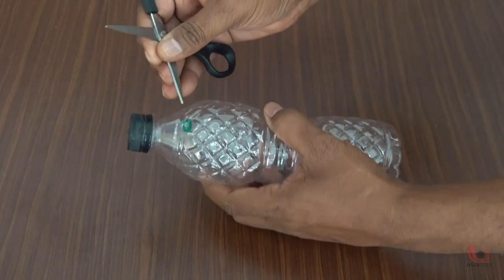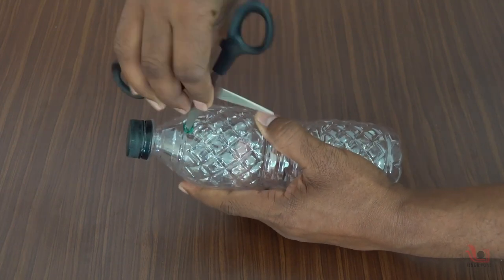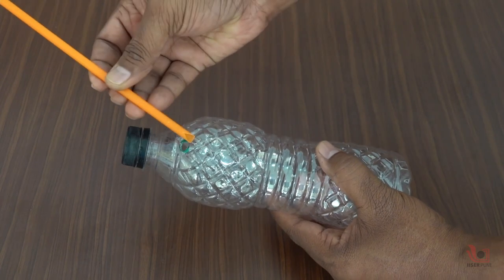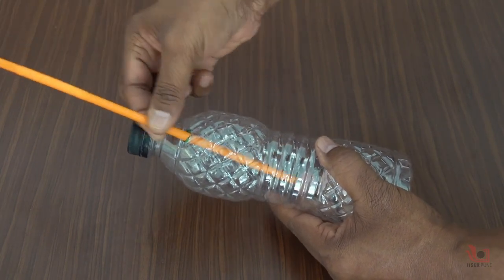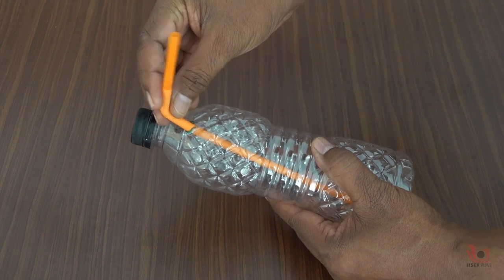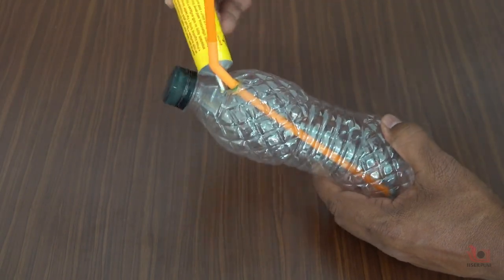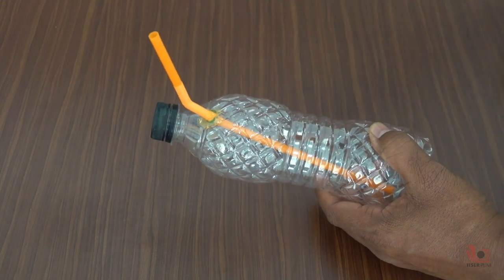First, make a hole in the plastic bottle near the neck by using the scissors. Insert the bent straw into the bottle such that the end of the straw should touch the bottom of the bottle. Secure the hole of the plastic bottle with glue and let the glue dry for about half an hour.